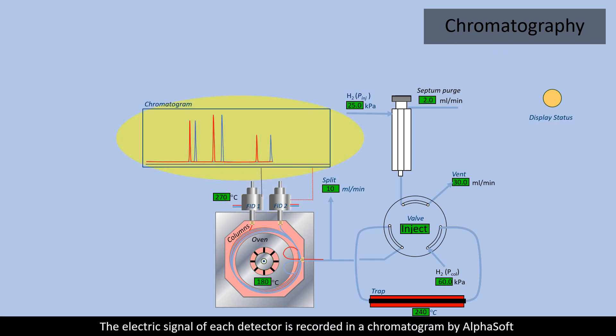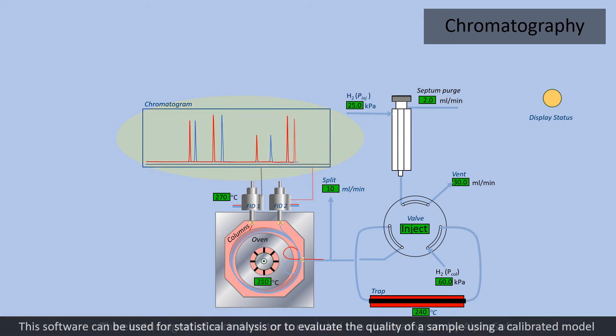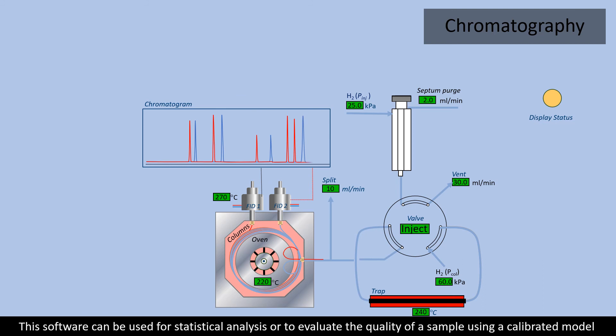The electric signal of each detector is recorded in a chromatogram by AlphaSoft. This software can be used for statistical analysis or to evaluate the quality of a sample using a calibrated model.